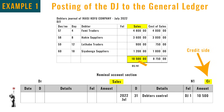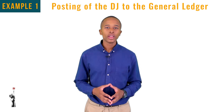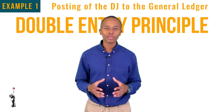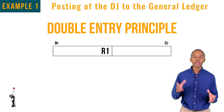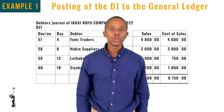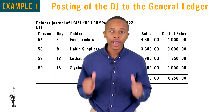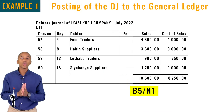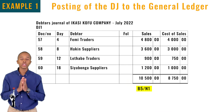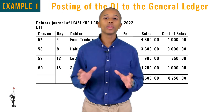Looking at the table behind me, sales is going to be credited with the amount of the selling price because it is an income that increases the owner's equity on the credit side. The double entry principle should be applied — for each entry on the debit side there should be an entry on the credit side. It is important to remember to put the folio numbers in the corresponding columns.